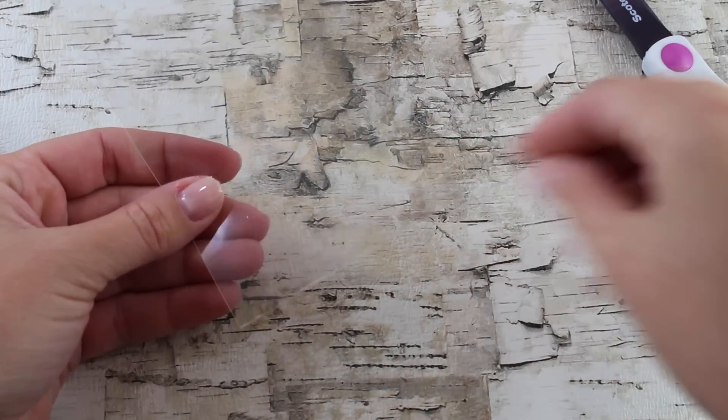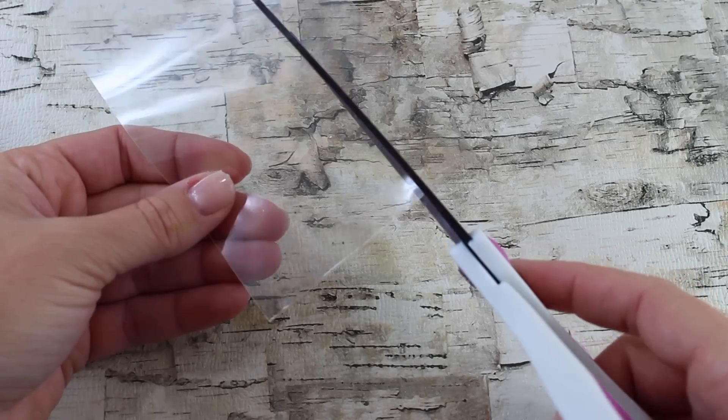For the cookie cutter, take a scrap piece of plastic. Cut it into a long strip.